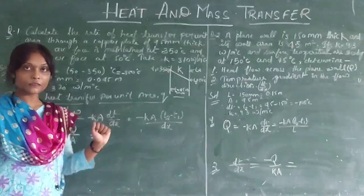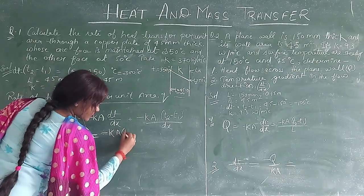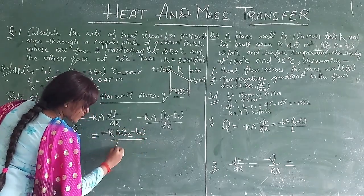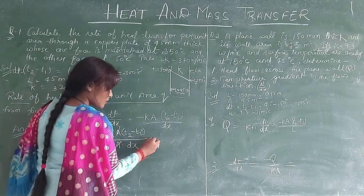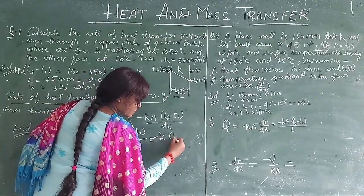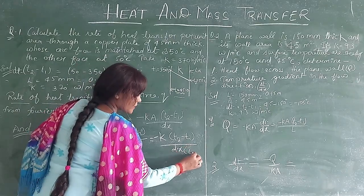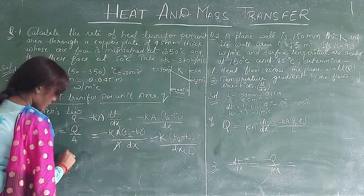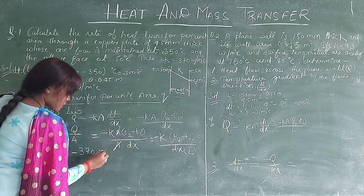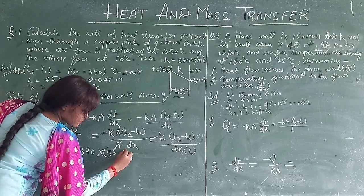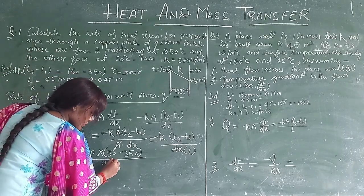Where we can denote T2 minus T1 and put it here. Q value here is K A T2 minus T1 upon delta x. Here A to A cancel. So Q is equal to K, T2 minus T1 upon delta x, which we can call L. Now we put the values.